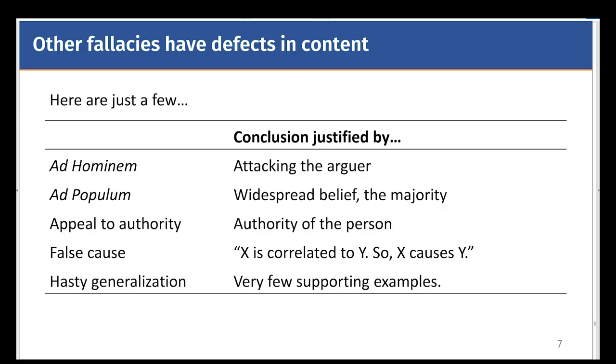And there's also the fallacy of hasty generalization. The conclusion is justified by very few supporting examples. A famous example links autism with vaccination despite this not being true. The argument states that due to a small number of cases that seem to link autism with vaccination, then we would say that autism should be linked to vaccination. This is a hasty generalization. It does not consider reliable and sufficient evidence.